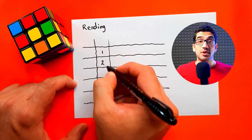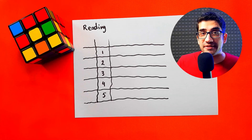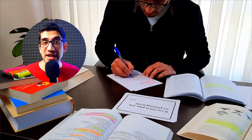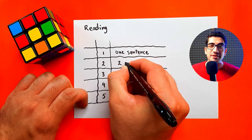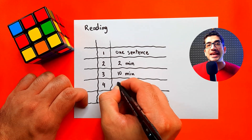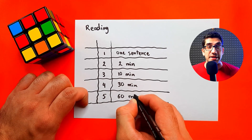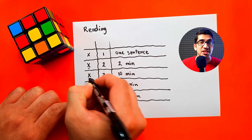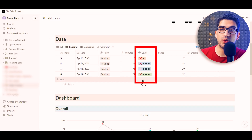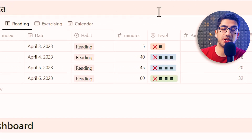For tracking habits, I use a levels system. Let's take reading as an example. I suggest defining five levels: the show-up level, easy level, medium level, hard level, and hero level. Reading one sentence can be the show-up level, while reading for 2 minutes, 10 minutes, 30 minutes, and 60 minutes can be definitions for easy, medium, hard, and hero levels. I suggest tracking habits using these notations and symbols.